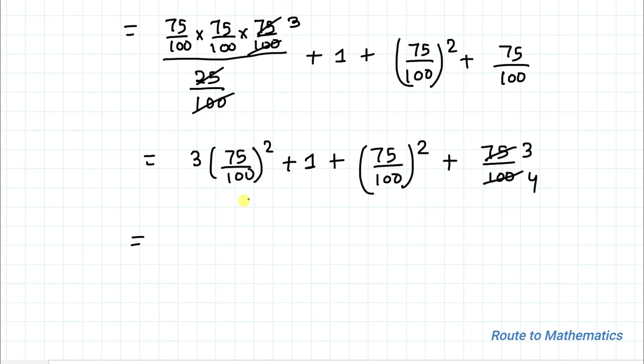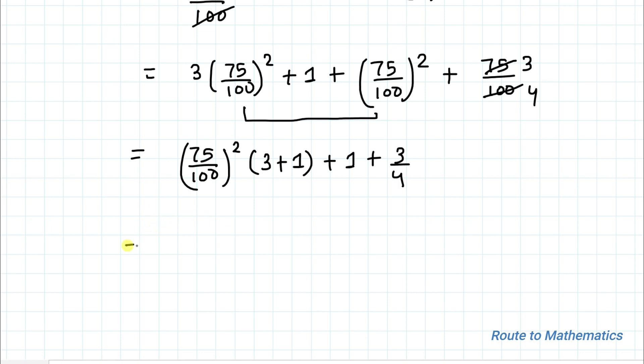Now I will take 75 by 100 square common from these two terms. So we can write 75 by 100 square multiplied with 3 plus 1 plus 1 plus 3 by 4. This equals to we have 4 similarly 75 by 100 can be simplified with 3 by 4. So 3 by 4 square plus 1 plus 3 by 4.